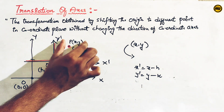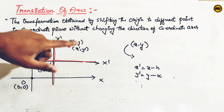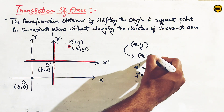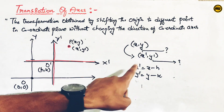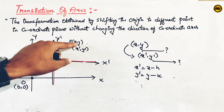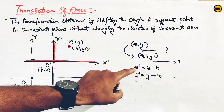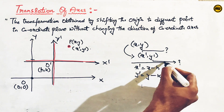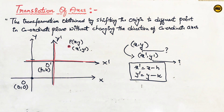The coordinates in the original system are x, y. In the new system they are x-dash, y-dash. We have: x-dash is equal to x minus h, and y-dash is equal to y minus k. This is the formula for the concept of translation of axes.